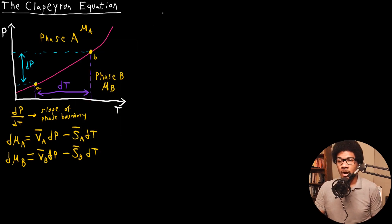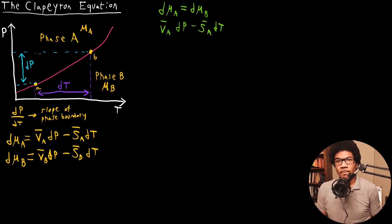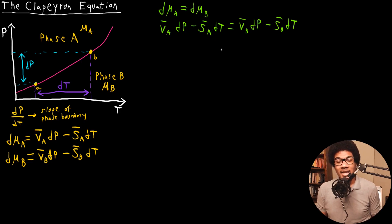What I want to do now is take advantage of the fact that at equilibrium — during the phase transition, when both phases are in equilibrium — their chemical potentials are going to be equal. So we can say that dμ_A is going to be equal to dμ_B. What that means is that we can set both expressions equal to each other: V̄_A dp − S̄_A dT = V̄_B dp − S̄_B dT. We have this equality because the phases are equal at equilibrium, so I'm going to put like terms on both sides.